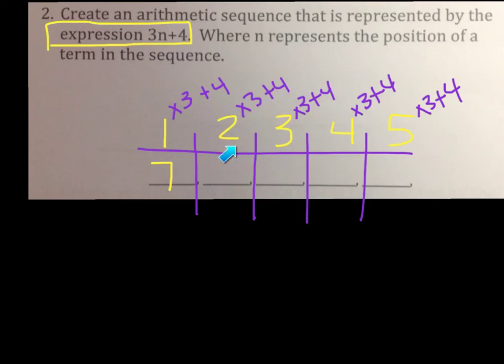Okay, then for the third term, what would I do? Three times three plus four equals thirteen. Okay, perfect. How about the fourth term? Sixteen. Okay, and how about fifth term? Nineteen.